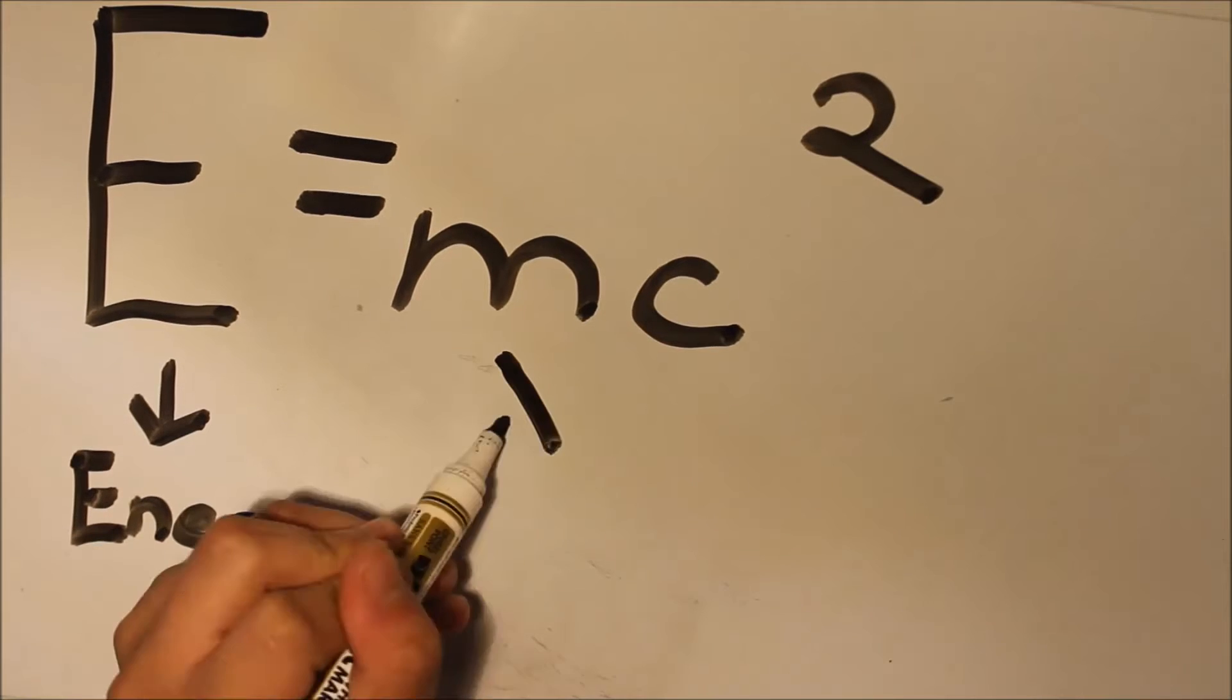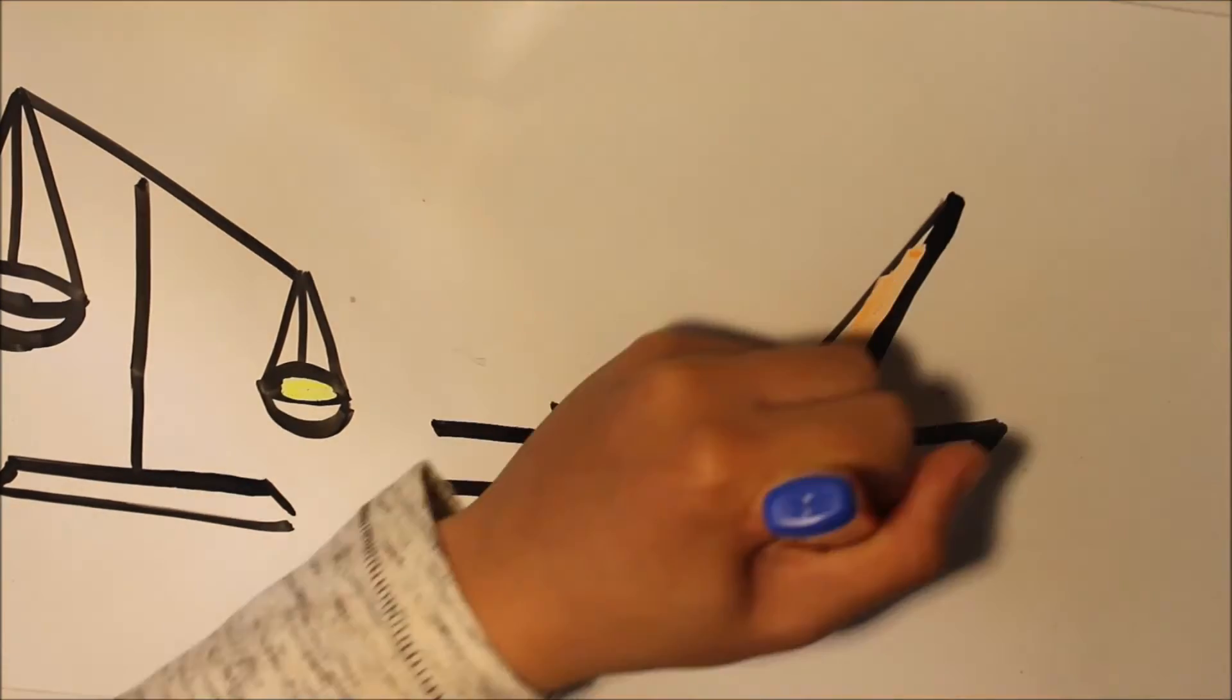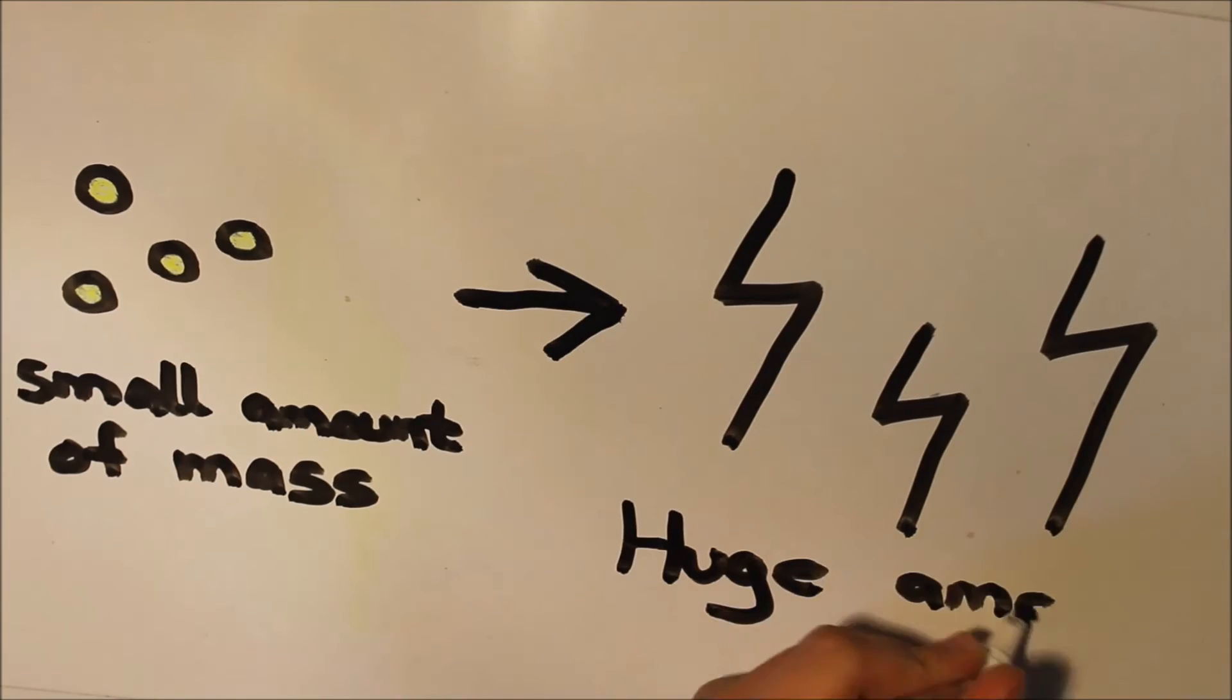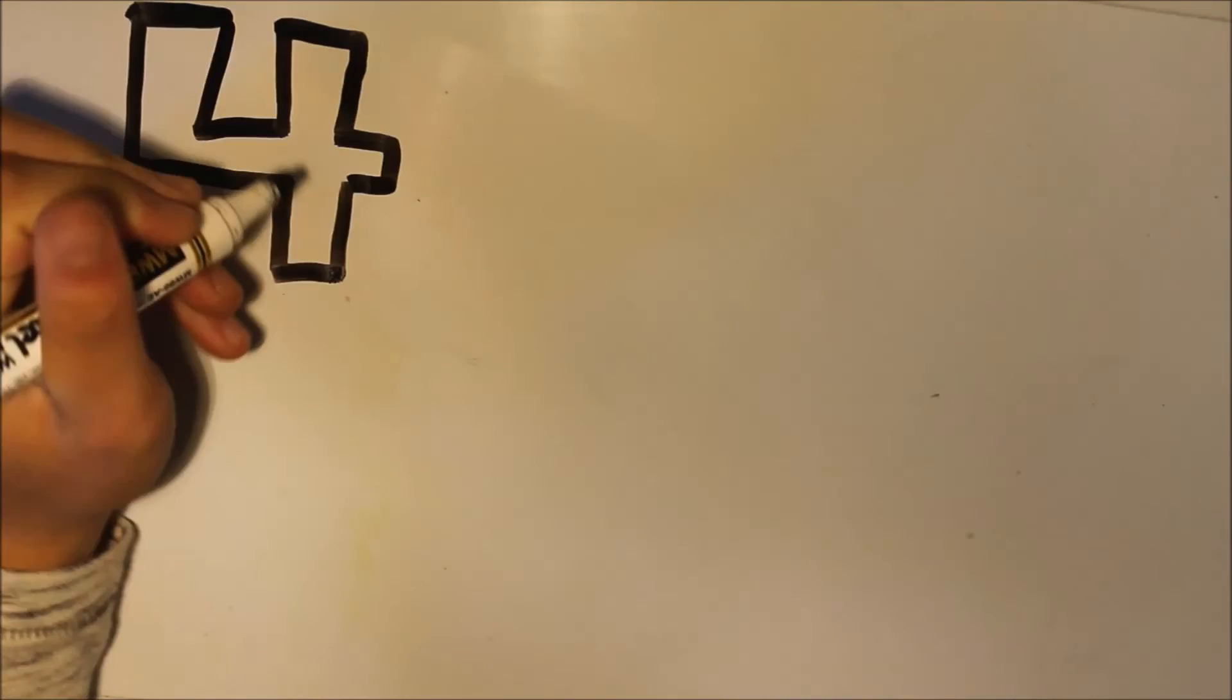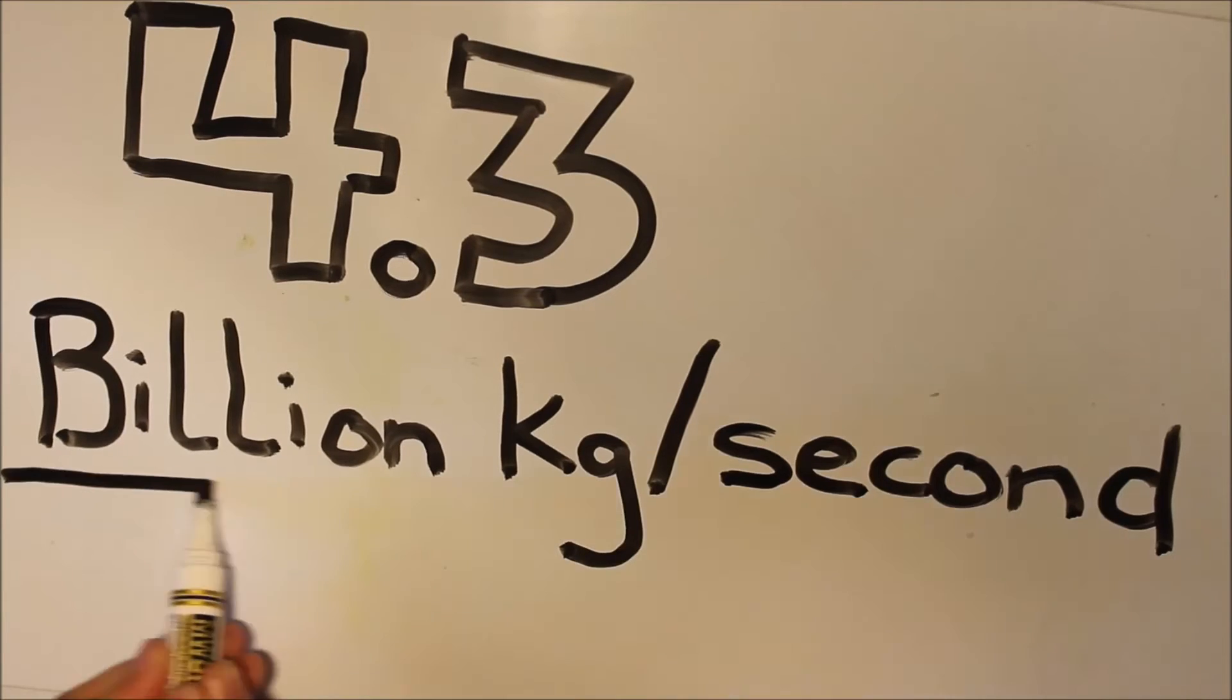E equals MC squared means energy equals mass times speed of light squared. This equation tells us that the mass that comes out is converted into a lot of energy. The speed of light is a huge factor. Small amounts of mass lost is a huge amount of energy. The sun loses about 4.3 billion kg per second. That amount of mass is converted into energy.